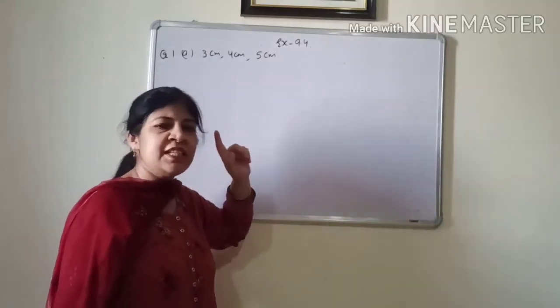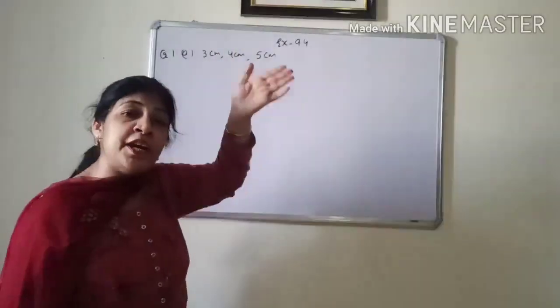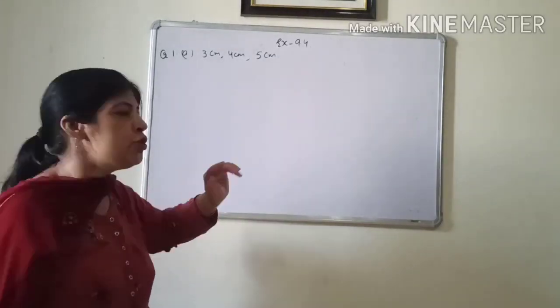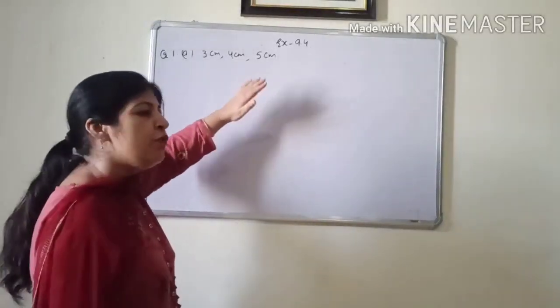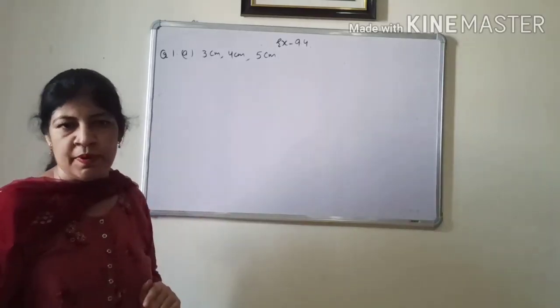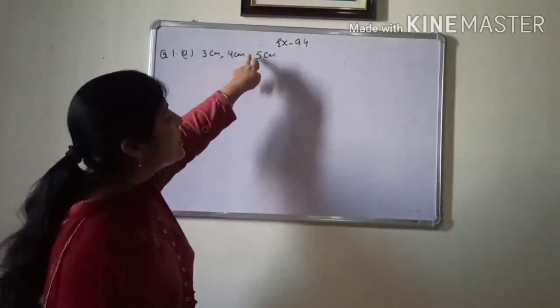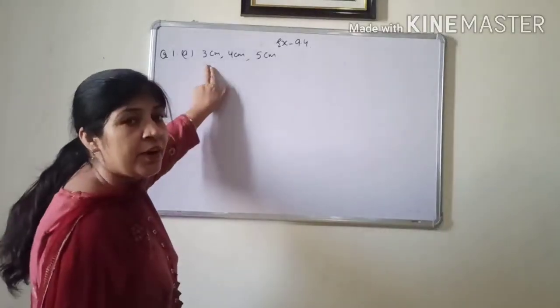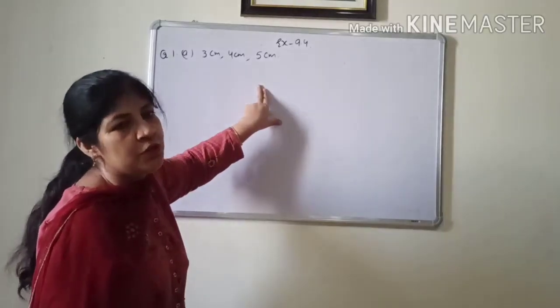In previous exercise, we have done, can these sides be the sides of a triangle, only simple triangle? If we want to show the given sides are the sides of a triangle, we apply triangle inequality property. But to show the given sides are the sides of a right angle triangle, we need to apply Pythagoras theorem.